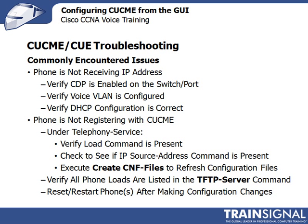Now we want to touch briefly on some common issues with the express platforms. Frequently one that you'll run into is a phone not receiving an IP address. Start off by making sure that CDP — Cisco Discovery Protocol — is enabled on that switch or port. Because you cannot get a phone's VLAN configuration without CDP. Otherwise, you have to do something manual. Verify that CDP is enabled.